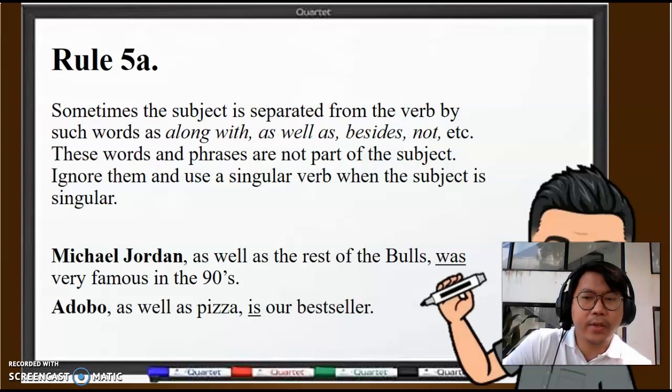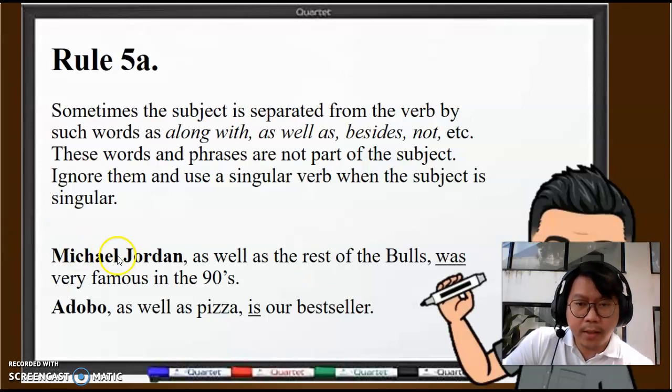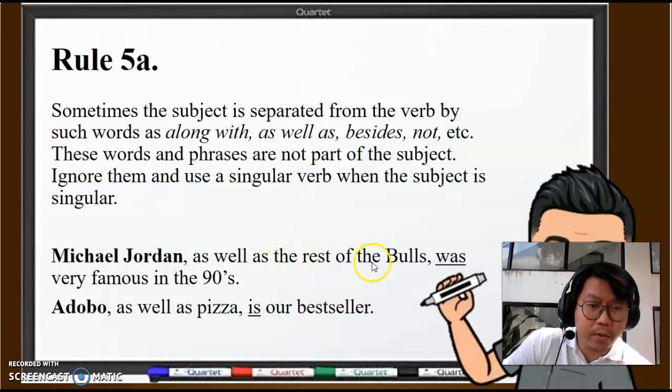You would notice sometimes there are sentences that use phrases like "along with," "as well as," "besides." What you have to understand is these phrases do not affect the singularity of the subject. If the subject is singular, let's have a look at the following examples. The bolded words are the subjects, of course. So first example: Michael Jordan, as well as the rest of the Bulls, was very famous in the 90s.